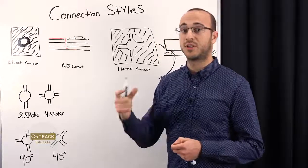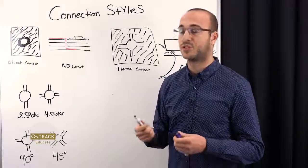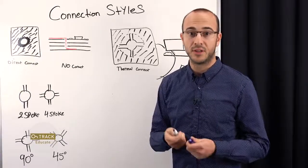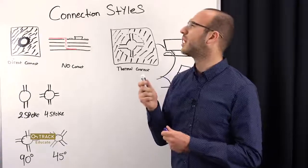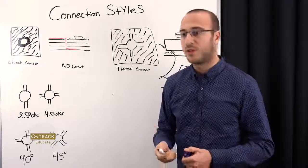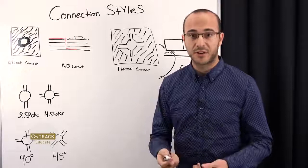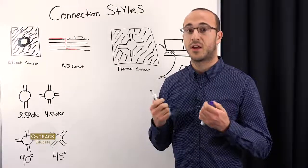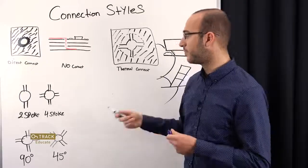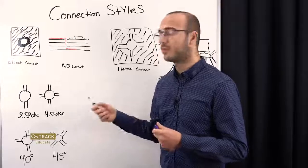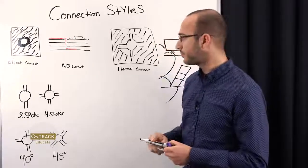Also, you'd want to adjust the width of those spokes. And if you want to determine the width, you can use something like IPC 2152, or a calculator like Saturn, or even something like PDN Analyzer. And they could help you determine what a good number of spokes is and the width.